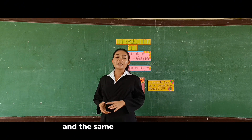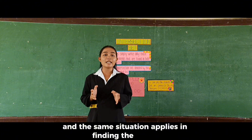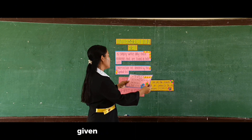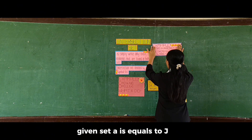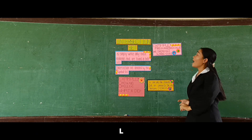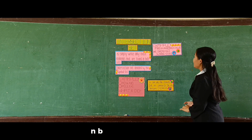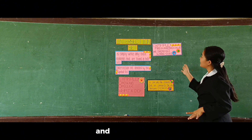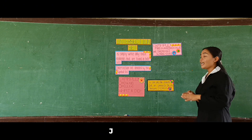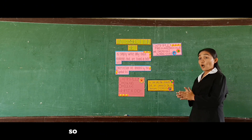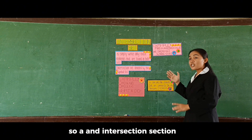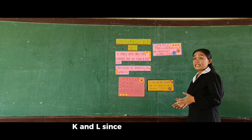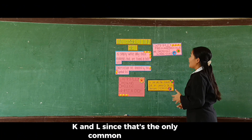The same situation applies in finding common letters in the alphabet. For example, given set A = {J, T, L, M, N}, set B = {H, J, T, L, O}, and set C = {A, B, J, G, L}. So A intersection B intersection C = {J, T, L}, since those are the only common elements in each set.